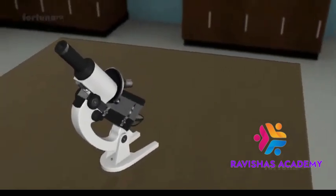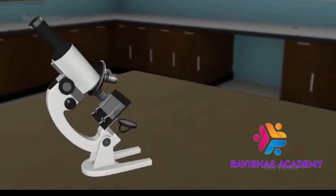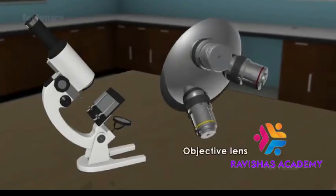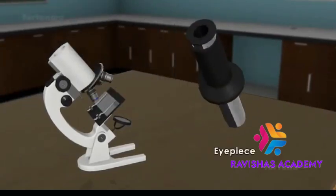There are three major parts to the compound microscope: a body tube, an objective lens, and an eyepiece.